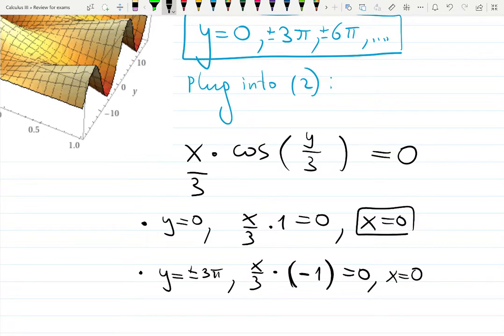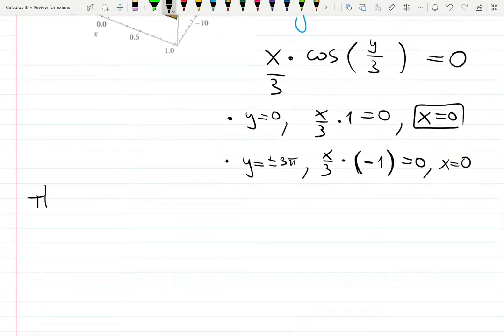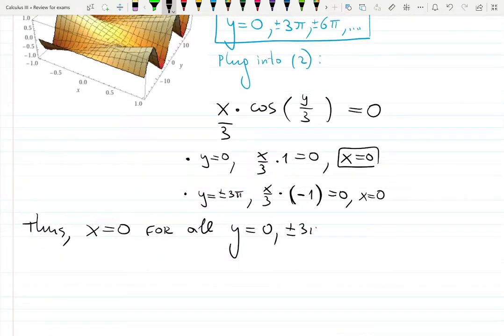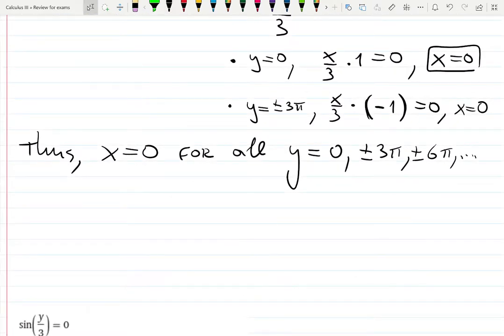In this case, we have x always equal to zero. So I will say x is zero for all y's which are zero, ±3π, ±6π, and so on. We need to express it somehow and actually justify that this hopefully gives us saddle points.